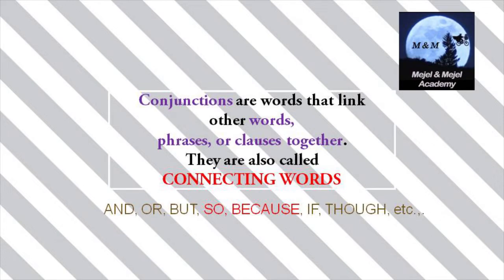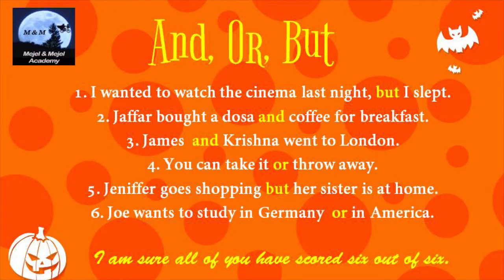Example: 'I wanted to watch the cinema last night but I slept.' This is a contrasting relationship — therefore the conjunction used is 'but'. Another example: 'Jennifer goes shopping but her sister is at home.' Again, this is contrasting — therefore 'but'.